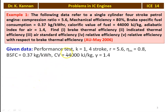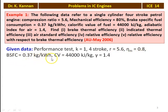This is a performance test. Number of cylinders k equals 1, 4-stroke engine, compression ratio is 5.6, mechanical efficiency is 0.8, brake specific fuel consumption is 0.37 kg/kWh, calorific value of the fuel is 44,000 kJ/kg, and gamma equals 1.4.